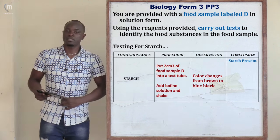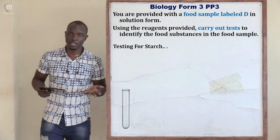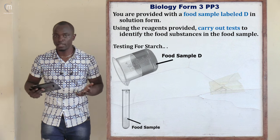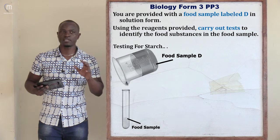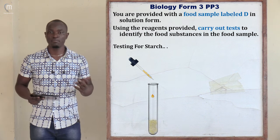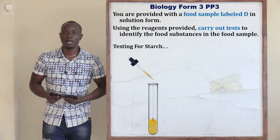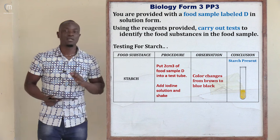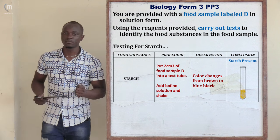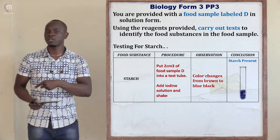The last part of the table tests for starch. Put about 2 cm³ of sample D in a clean test tube, then add two drops of iodine solution and observe. In this case, the color of iodine changed from brown to blue-black, indicating that starch was present.